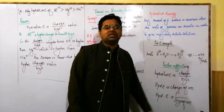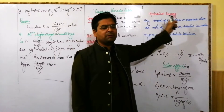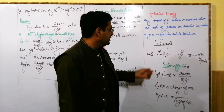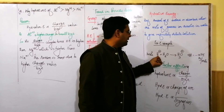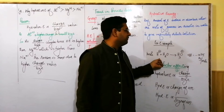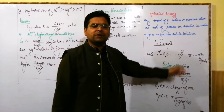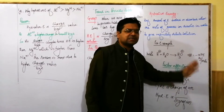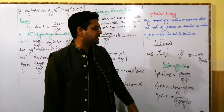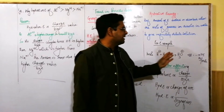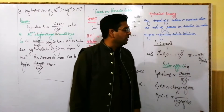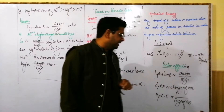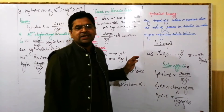The heat energy evolved or absorbed when one mole of gaseous ions is dissolved in water to give infinite dilute solution is called hydration energy. For example, when one mole of H⁺ is dissolved in water forming H₃O⁺, heat energy is evolved: −1075 kJ/mol. The negative sign means it is an exothermic reaction.